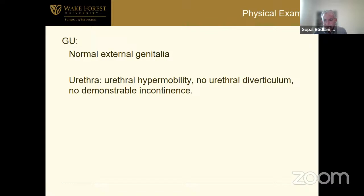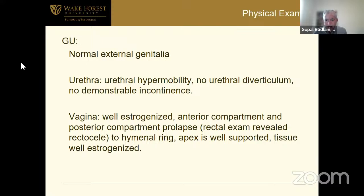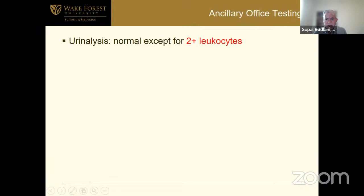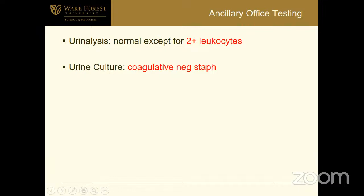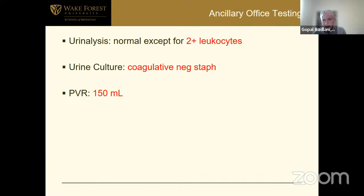There's no urethral diverticulum, so the post-void dribble is not due to that. Her apex is well supported — she's post-hysterectomy. Tissue is well estrogenized. Urine analysis is normal except for leukocytes; culture is staph-negative. That typically signifies contamination. PVR is 150 — that depends, you need to repeat the measurement; if it continues to be elevated, then it's significant.